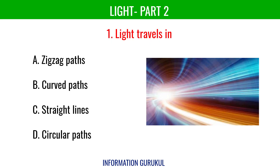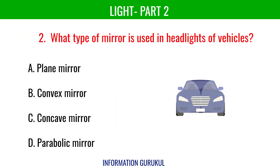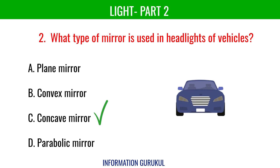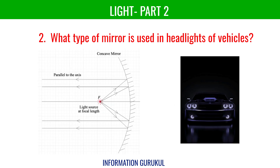In this video we will discuss multiple choice questions on the second part of the chapter Light from our ongoing physics series. Light travels in a straight line. What type of mirror is used in headlights of vehicles? Concave mirrors. As concave mirrors are converging mirrors, they enhance the light beam for better visibility.